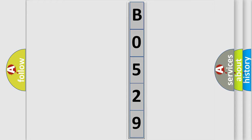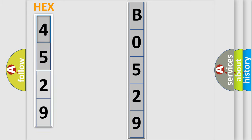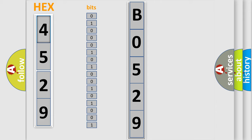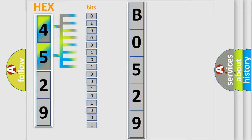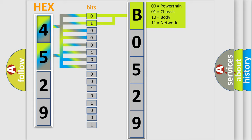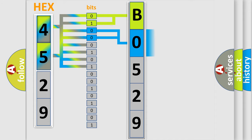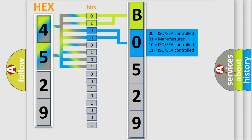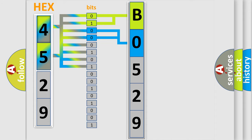The error code is split into two bytes consisting of 16 bits. One bit is the basic unit that each computer works with. The bit has two logical states: zero, the low level, and one, the high level. By combining the first two bits, the basic character of the error code is expressed. The next two bits determine the second character. The last bits of the first byte define the third character of the code.